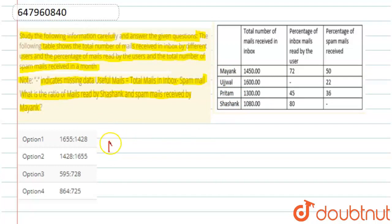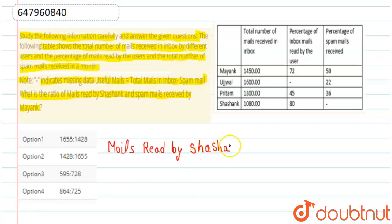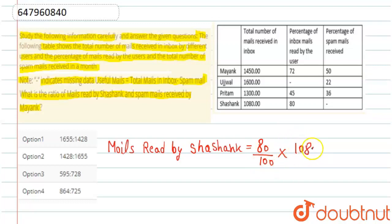Mails read by Sasank: total mail received by Sasank is 1080, and the percentage of mail read is 80%. So, mails read by Sasank equals 80 upon 100 multiplied by 1080, which equals 864.